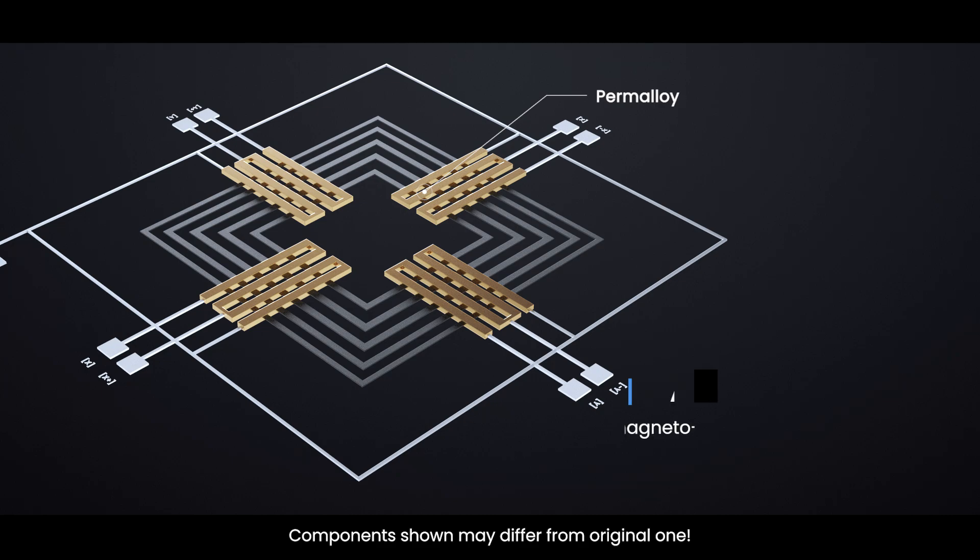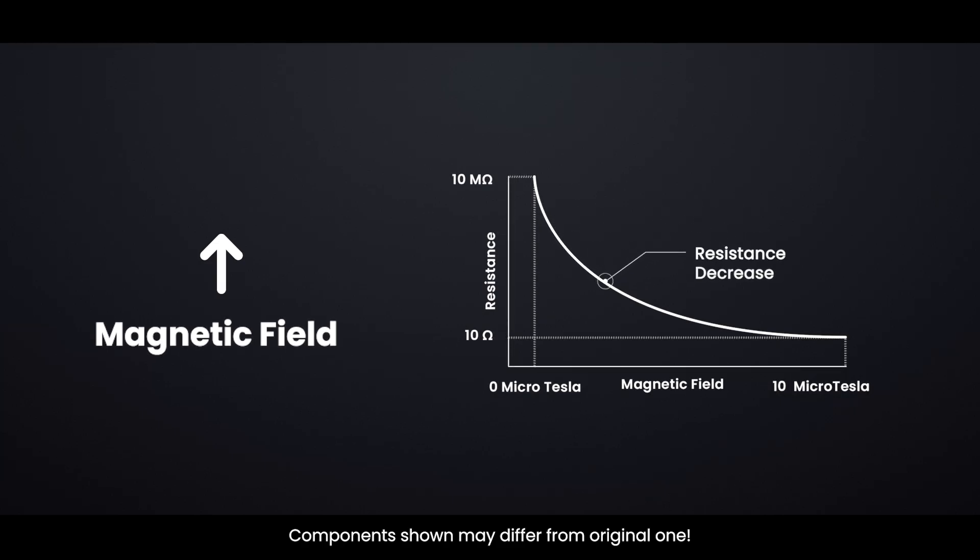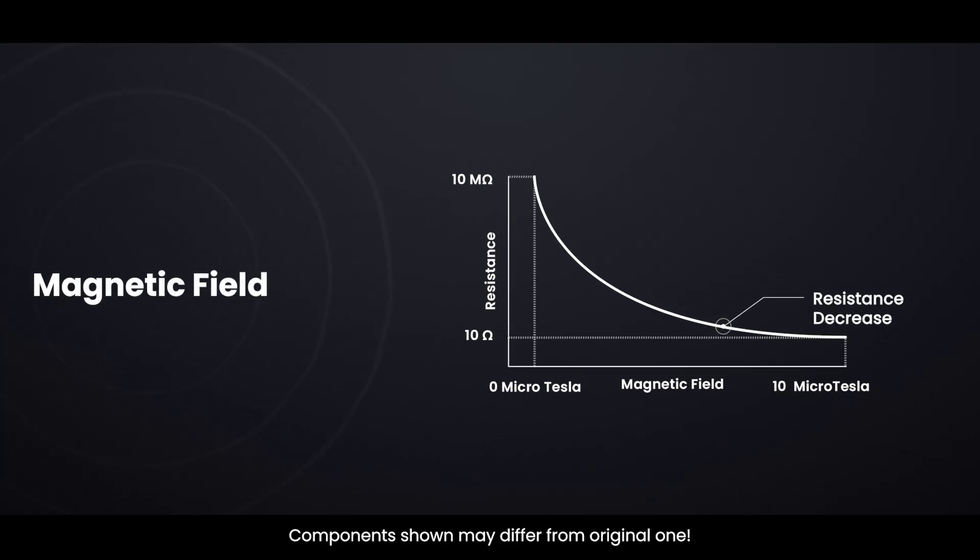This material exhibits a property known as anisotropic magnetoresistance, AMR, meaning its electrical resistance changes depending on the direction of the surrounding magnetic field.